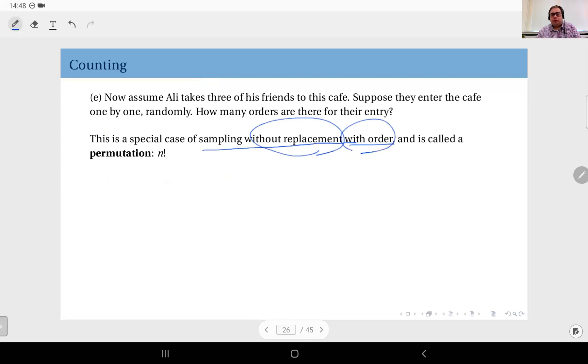Without replacement, we do not repeat or reuse the items, but we care about the order. If you change the order, the outcome is assumed to be different, and this we call permutation. What's the number of permutations or what's the number of orders you can have on a population of n?